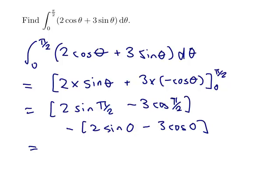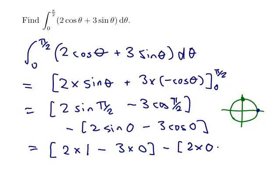Okay, sin pi on 2. I'll just draw myself a picture. That's the unit circle. There's pi on 2, sin is the y-coordinate, so sin pi on 2 is 1. So, 2 times 1. Cos pi on 2 would be the x-coordinate, which is 0. So sin 0 is 0, and cos 0 is 1.